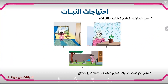سنقوم بحل بعض التمارين معاً. أميّز السلوك السليم للعناية بالنبات: هذه فتاة تحجب أشعة الشمس عن النبات - سلوك خاطئ. وهذه فتاة تفتح النوافذ كي تصل أشعة الشمس إلى النبات - سلوك صحيح. وهذه فتاة تقوم بسقاية النباتات - سلوك صحيح.